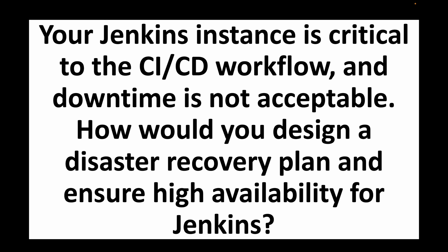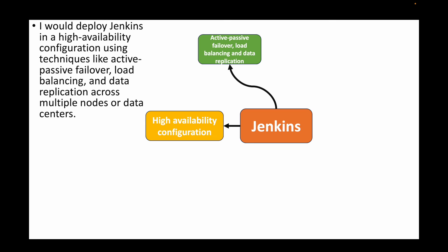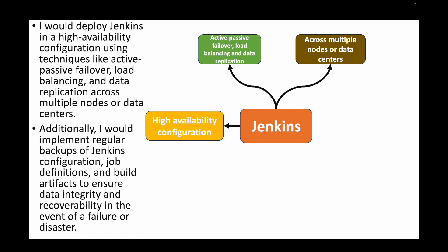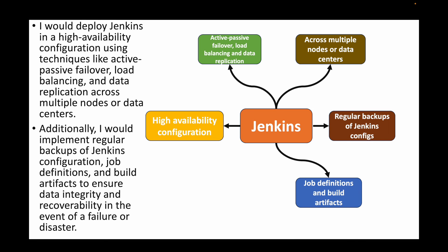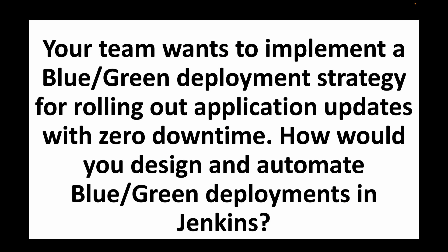The next question: your Jenkins instance is critical to the CI/CD workflow and downtime is not acceptable — how would you design a disaster recovery plan and ensure high availability? Deploy Jenkins in a high-availability configuration using techniques like active-passive failover, load balancing, and data replication across multiple nodes or data centers. Additionally, implement regular backups of Jenkins configurations, job definitions, and build artifacts so you can easily recover and maintain data integrity in the event of a failure.